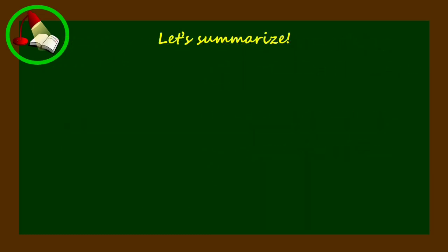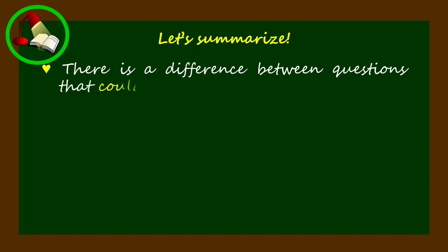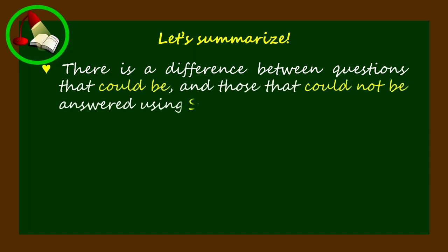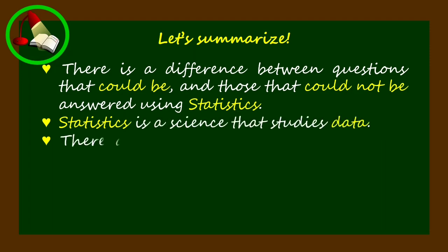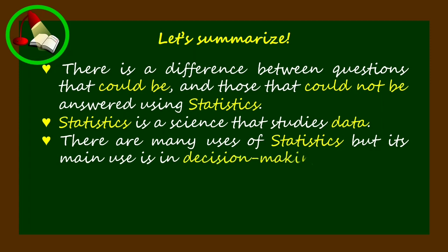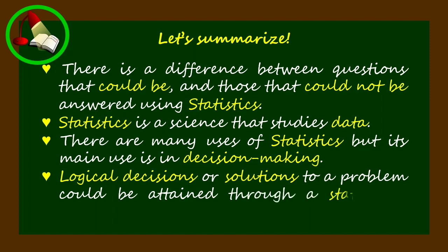Let's summarize. There is a difference between questions that could be and those that could not be answered using statistics. Statistics is a science that studies data. There are many uses of statistics, but its main use is in decision making. Logical decisions or solutions to a problem could be attained through a statistical process.